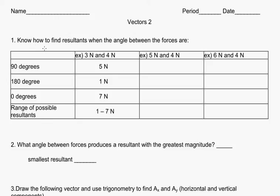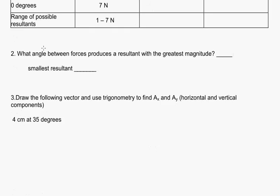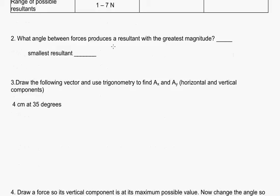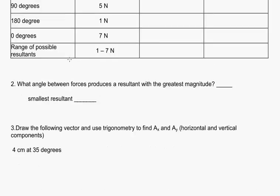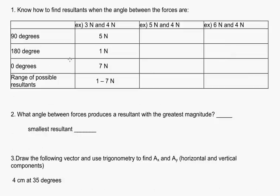Welcome back to part 2 class. Now let's take a look at question number 2. What angle between forces produces a resultant with the greatest magnitude? And then which one produces the smallest magnitude or smallest resultant? So let's take a look. We look up here, we can just look at this first column, and you'll notice which number of these three is largest. You should get the hint that that's going to be 0 degrees.